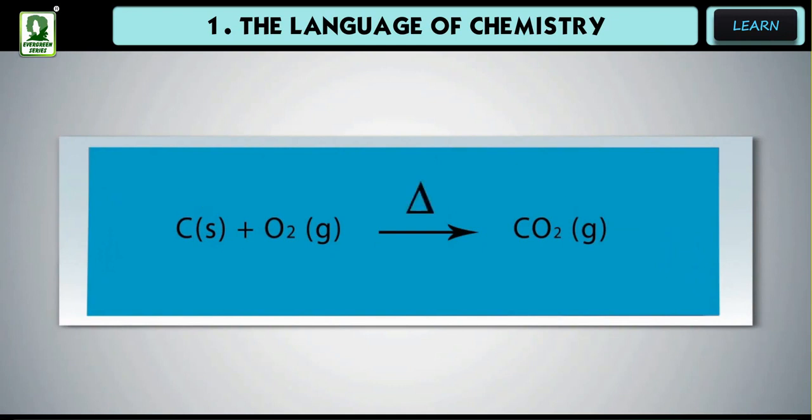Conditions necessary for the reaction to occur are represented along the center arrow between the reactants and products.